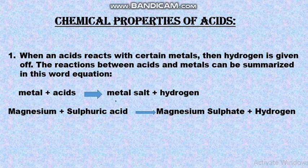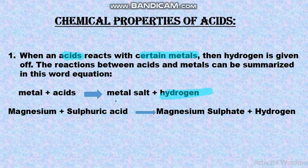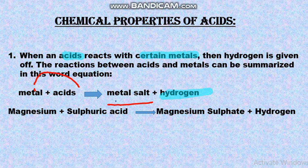Now we will discuss the chemical properties of acids. When an acid reacts with certain metals, hydrogen is given off. The relation between acid and metals can be summarized in the word equation: when acid reacts with a certain metal, metal salt and hydrogen are given off.